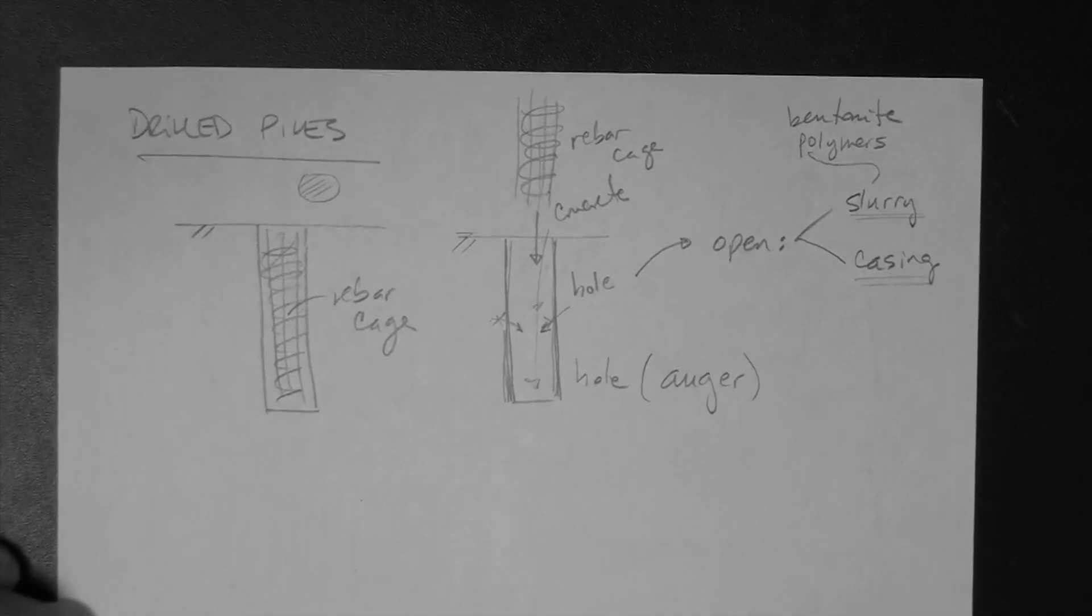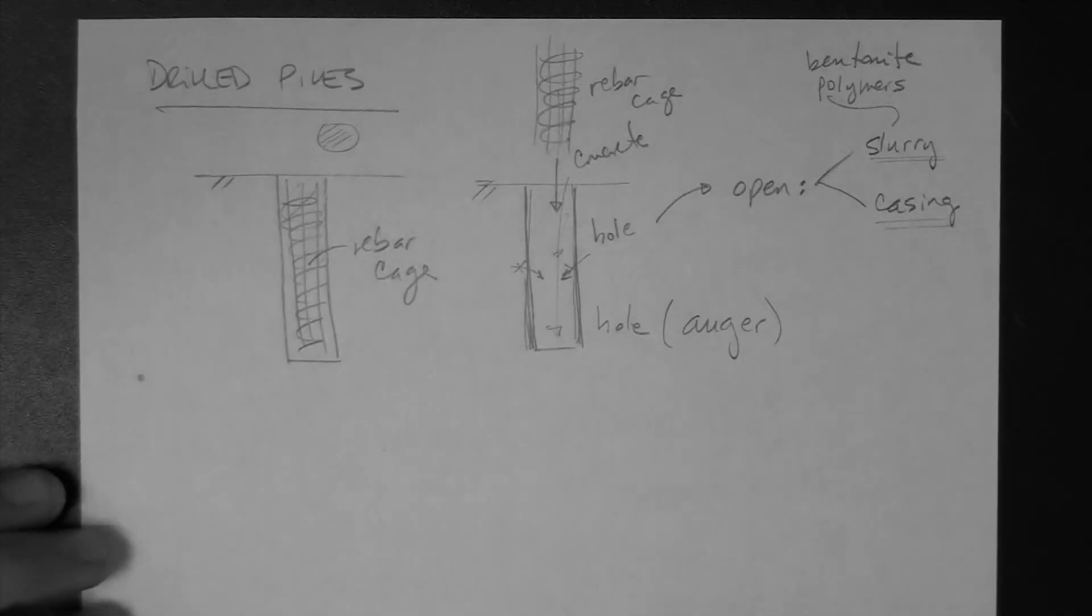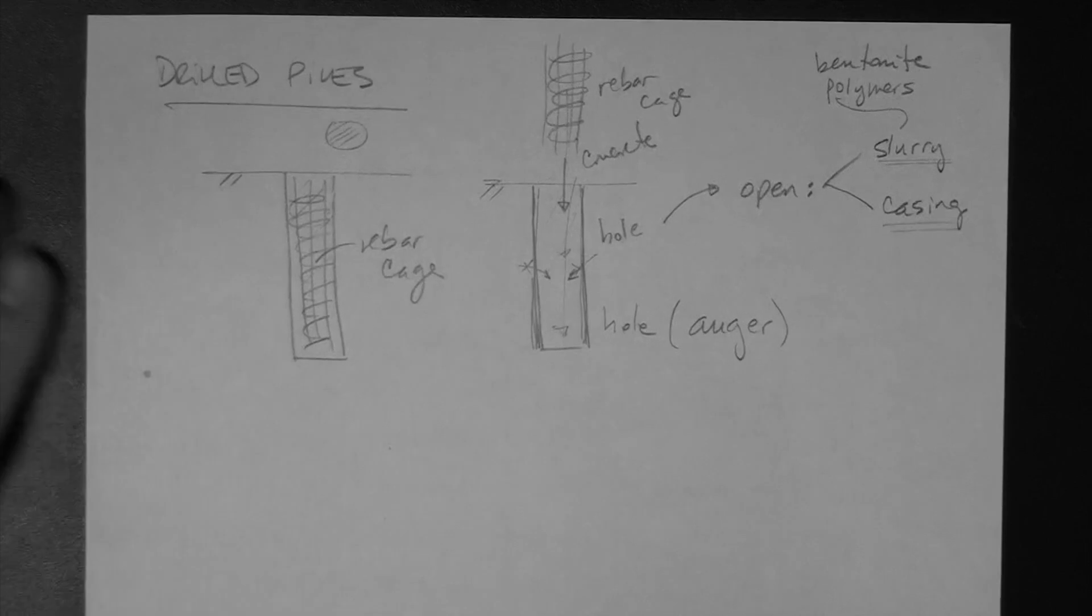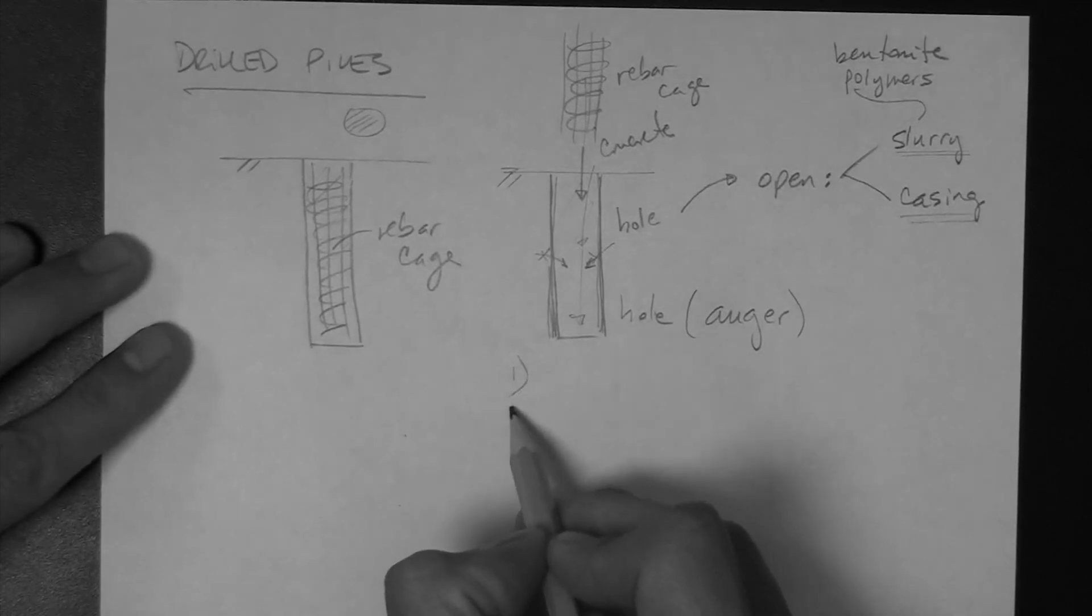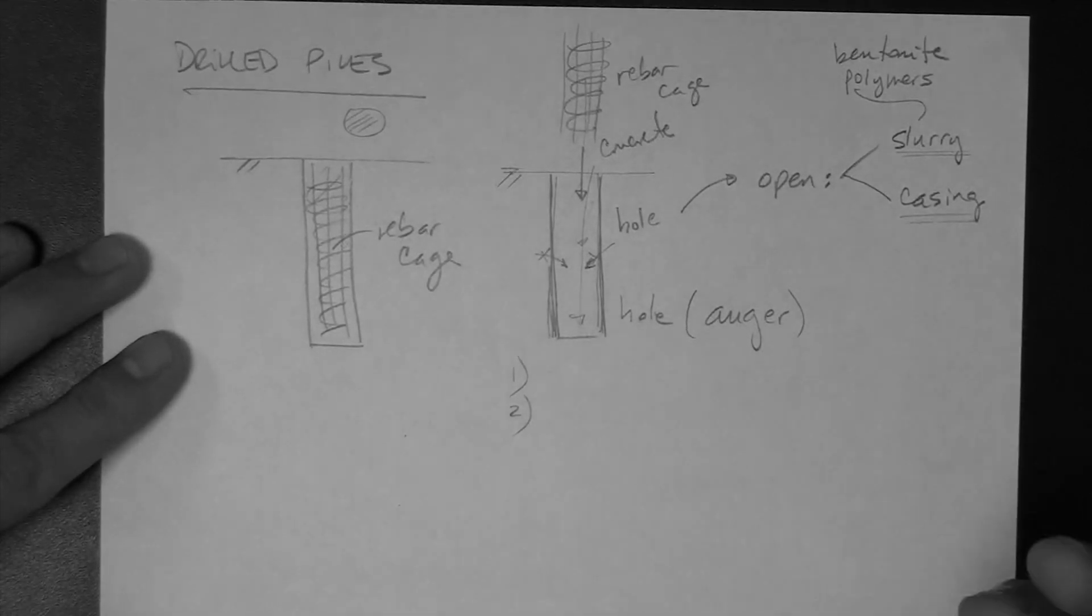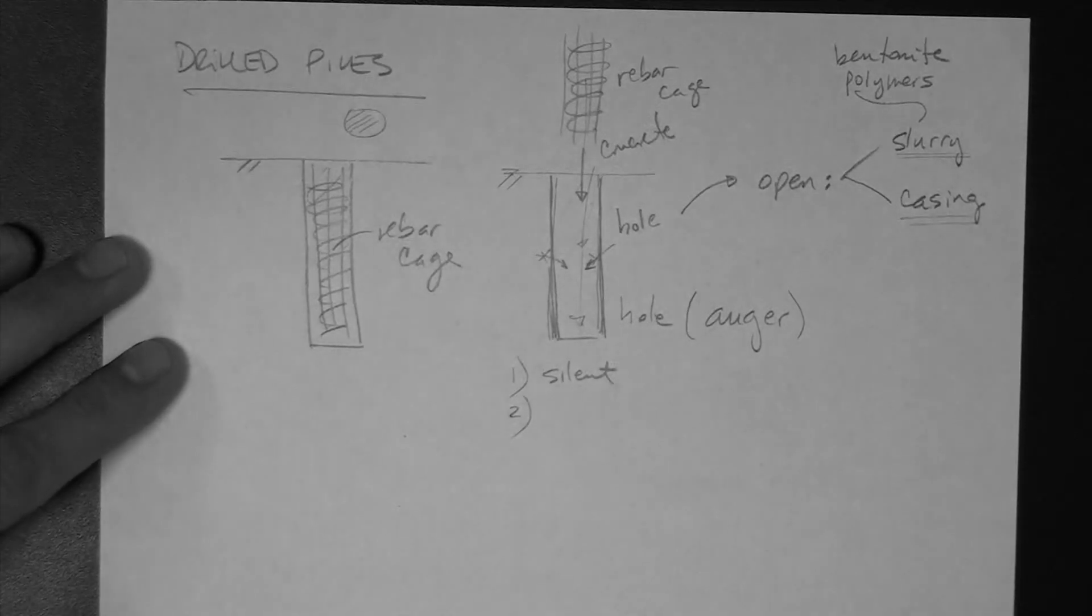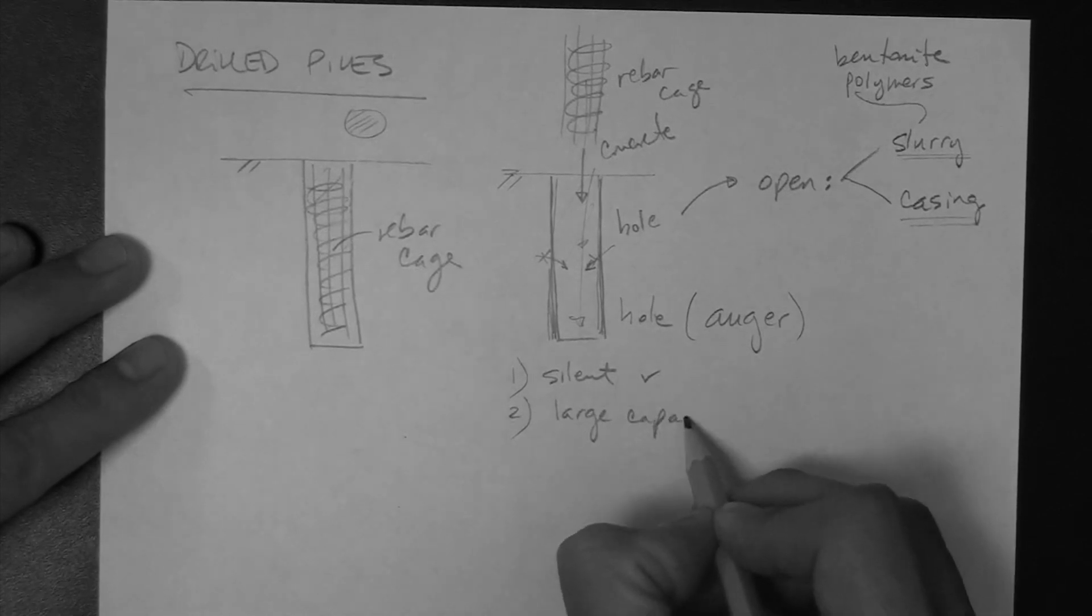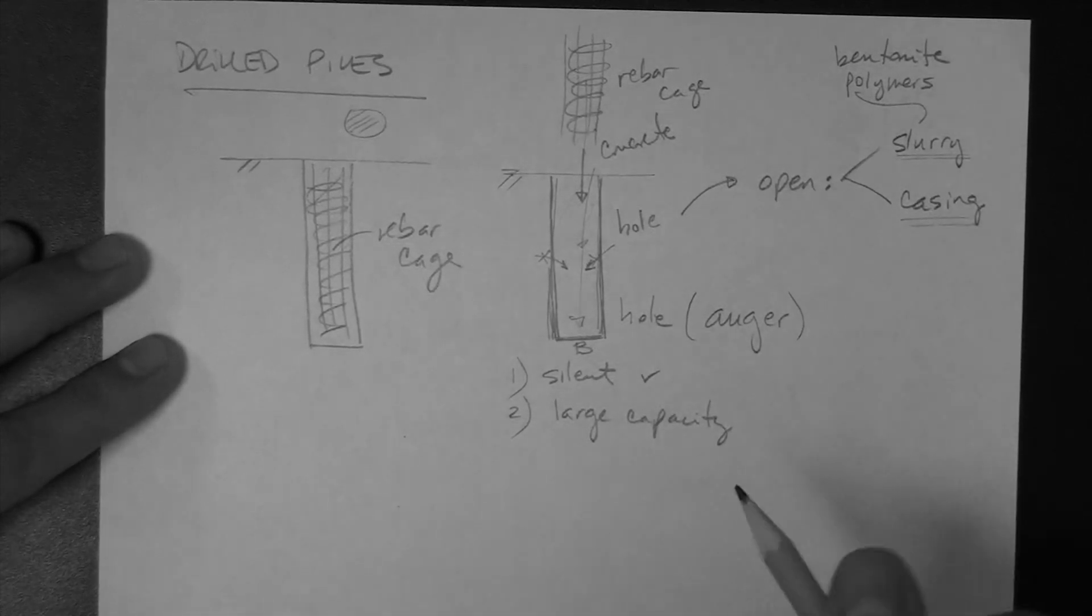So essentially that's in a rough sketch, this is a rough sketch of drilled piles. Again, I'm going to provide some links to videos that are going to show you exactly how this is done, time lapses and things by different companies. I'll provide that, but just to finish up here, essentially, the relative or the advantage of this type of situation or type of pile is that it's silent relative to the hammered or driven pile. Also, very large capacity. And the reason is that they can be made very large. The B can be huge.